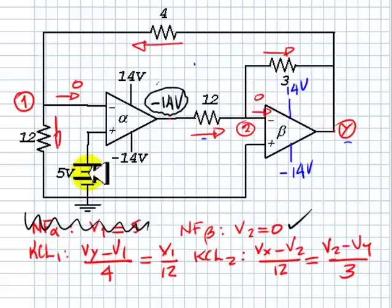KCL1: Vy minus V1 over 4 - this is this current, this one, that's correct - is equal to 0 plus V1 over 12. That is right.